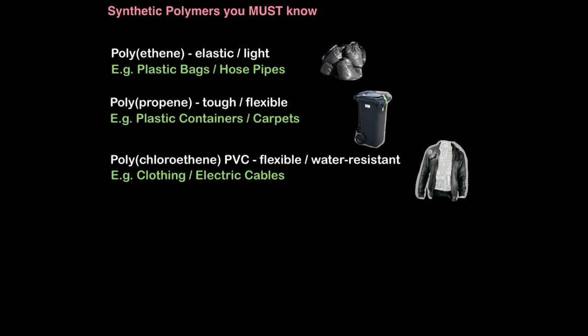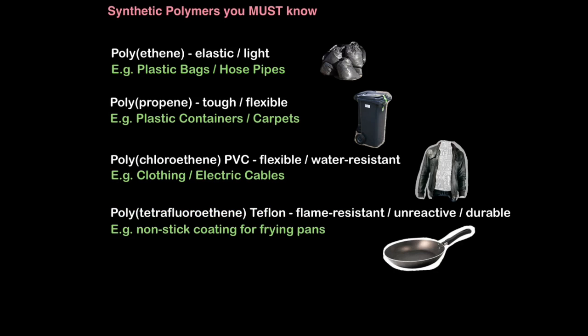Next, polychloroethene also known as PVC. PVC is flexible and water-resistant. For that reason, we can use it to make clothing such as fake leather and also electrical cables. Be aware that polychloroethene or PVC is not a hydrocarbon unlike these, because it contains chlorine. Remember, hydrocarbons are molecules that contain hydrogen and carbon atoms only. Finally, polytetrafluoroethene commonly known as Teflon is flame-resistant and unreactive and also very durable. It's perfect for making non-stick coating for frying pans.